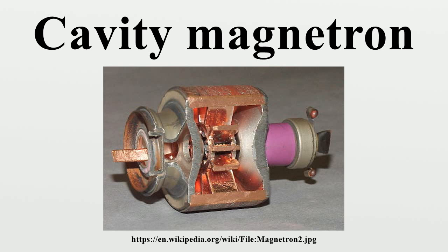In the magnetron design, the tube was made with two electrodes — typically with the cathode in the form of a metal rod in the center, and the anode as a cylinder around it. With no magnetic field present, the tube operates as a diode, with electrons flowing directly from the cathode to the anode. In the presence of a magnetic field, the electrons experience a force at right angles to their direction of motion, according to the left-hand rule, causing them to follow a curved path between the cathode and anode.